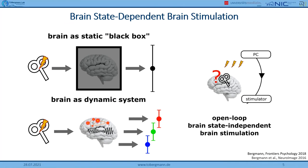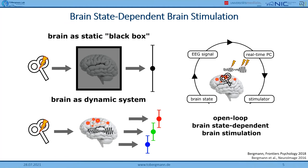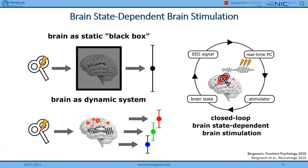For open-loop brain state-independent stimulation, we trigger the stimulator at any time independent of brain activity in a randomized fashion. For brain state-dependent stimulation, we take into account the brain state — for example, providing an EEG signal, looking at the amplitude and phase of a target frequency, and analyzing it in real time. We can then configure and trigger the stimulator at a certain time. Closing the loop — where we actually modify the brain states we are monitoring — is what we are aiming for in the future. Open-loop brain state-dependent stimulation is what we are doing already right now.